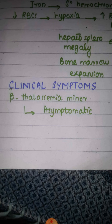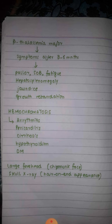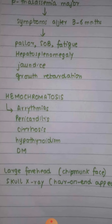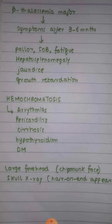In beta thalassemia minor the person is asymptomatic. In beta thalassemia major, symptoms appear after three to six months of age when fetal hemoglobin is replaced by hemoglobin A. Signs and symptoms include pallor, shortness of breath, fatigue, hepatosplenomegaly, jaundice, and growth retardation with skeletal abnormalities. Iron-induced hemochromatosis can cause arrhythmias, pericarditis, cirrhosis, hypothyroidism, or diabetes mellitus. The patient has a large forehead (chipmunk-like face), and skull X-ray shows a hair-on-end appearance with hair-like projections on the skull bone.